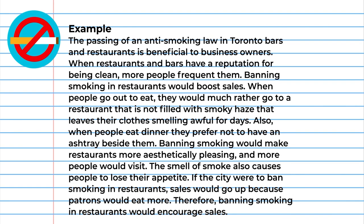The topic sentence in the following example paragraph would be: "The passing of an anti-smoking law in Toronto bars and restaurants is beneficial to business owners."